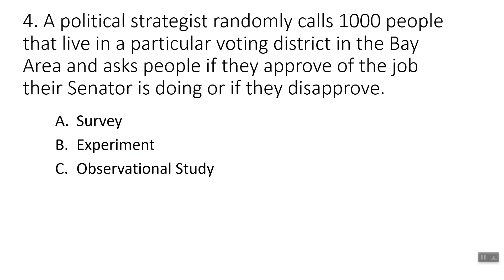Next: a political strategist randomly calls 1,000 people that live in a particular voting district in the Bay Area and asks people if they approve of the job their senator is doing or if they disapprove. We are randomly calling 1,000 people and just asking them questions. When you just ask people questions, that is a survey.